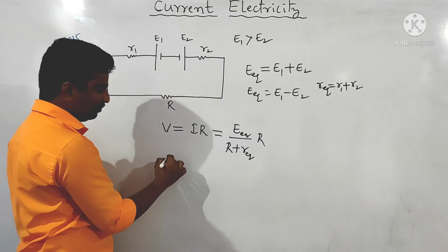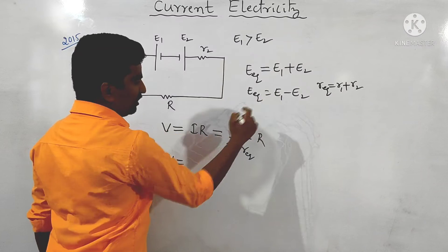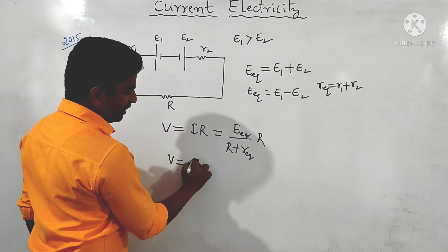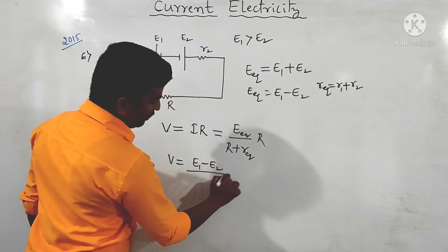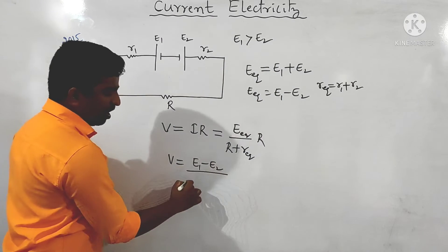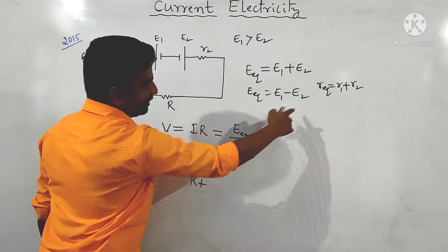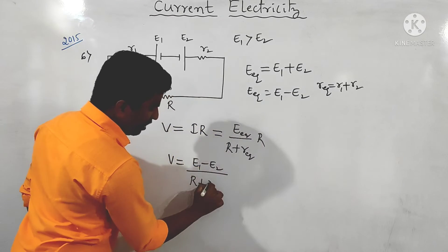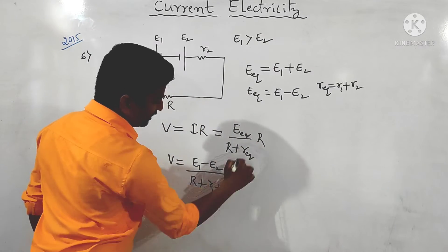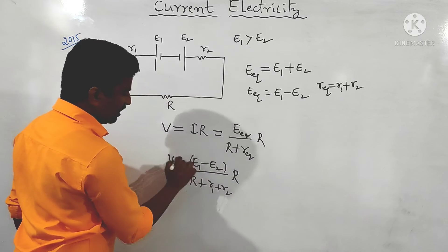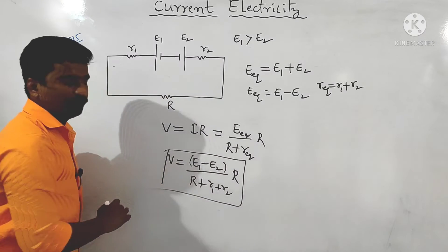Substituting into the formula: V equals E equivalent, which is (e1 − e2), divided by (R + R equivalent, which is R1 + R2), multiplied by external resistance R. This is the answer for the given question.